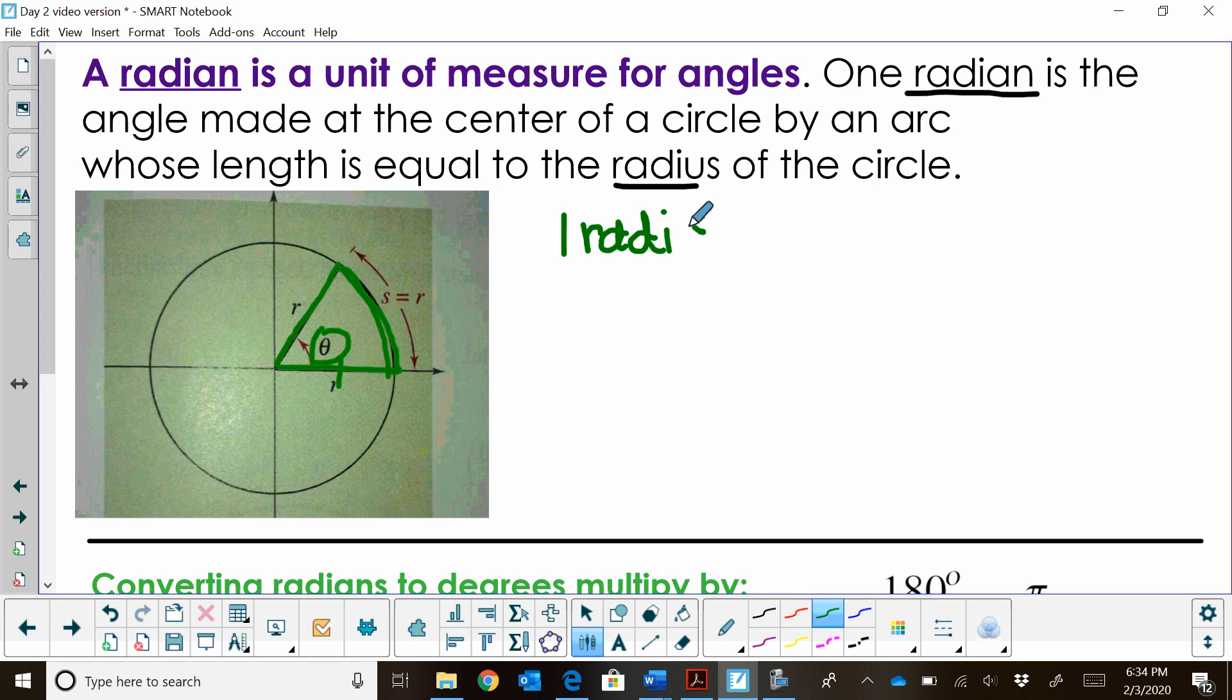Now, how many radians are in a circle? You've got to think, well, how many radiuses would it take to go around?